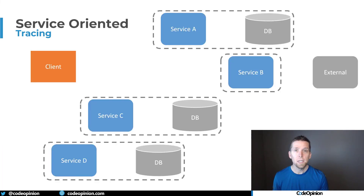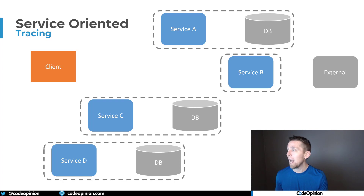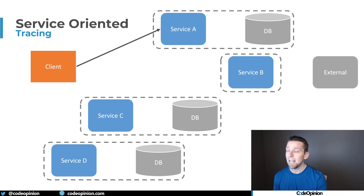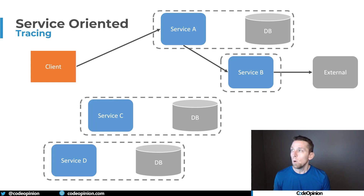But if you don't have a single process and you have a system decomposed into multiple different services, you really don't have any visibility into an end-to-end request. For example, a request from our client goes to service A, which reaches out to its database, and then service A calls service B. Service B may be making an external call, but from service A's perspective, we don't know what's happening beyond its own service boundary.